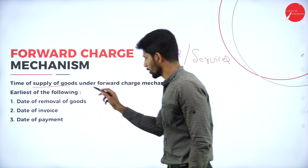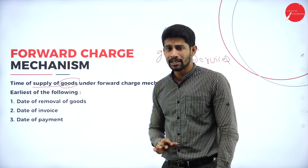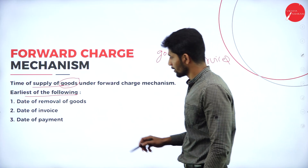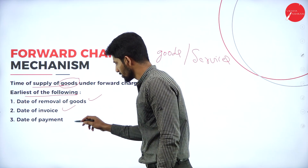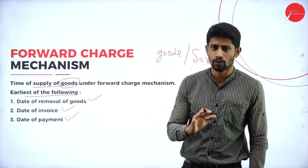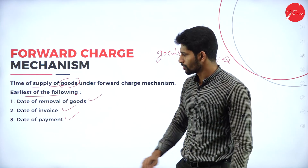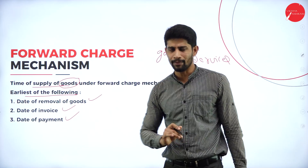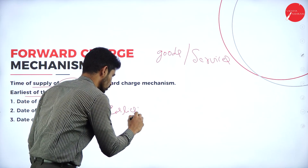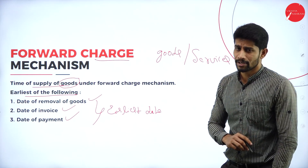Time of supply of goods under forward charge mechanism. If you are finding out the time of supply with respect to supply of goods, the rule is to take the earliest of the following: date of removal of goods, date of invoice, and date of payment. Among these three, the earliest date is to be considered as the date of time of supply of goods under forward charge mechanism.